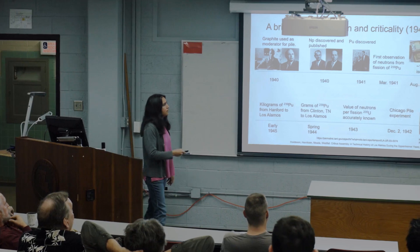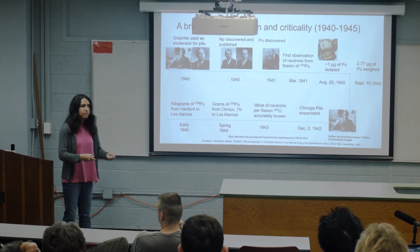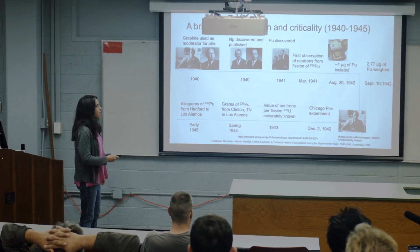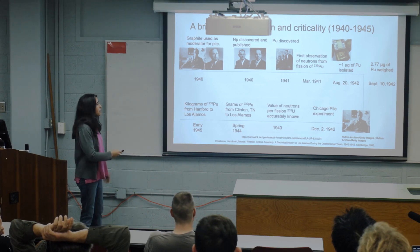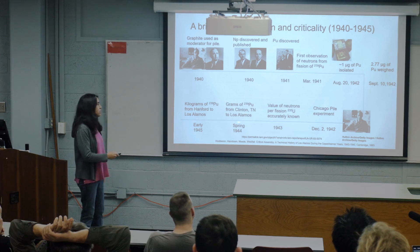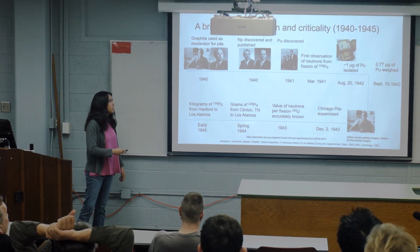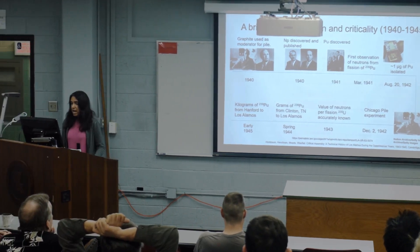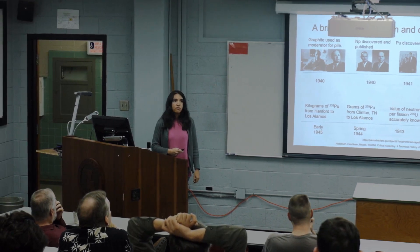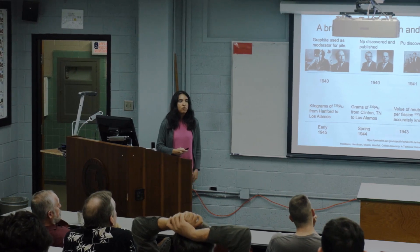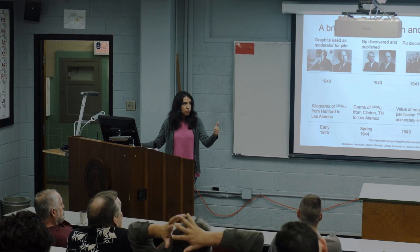The Chicago Pile experiment under Enrico Fermi using graphite as moderator occurred December 2nd, 1942. A more accurate value for neutrons per fission for uranium-235 was found in spring 1944. Grams of plutonium-239 from Clinton, Tennessee — Oak Ridge — were sent to Los Alamos. By 1945, kilograms of plutonium from Hanford went to Los Alamos. In just a few years, they went from discovering an element to making kilograms of it. This is a new element — a ton of unknowns — and you had to machine it into a super weapon.